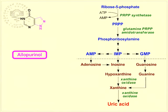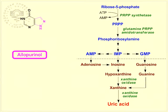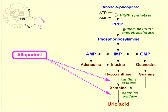Due to this structural similarity, allopurinol acts as a substrate of xanthine oxidase, and after binding to it, as its inhibitor. Xanthine oxidase converts allopurinol to alloxanthine, which blocks the active center of the enzyme.